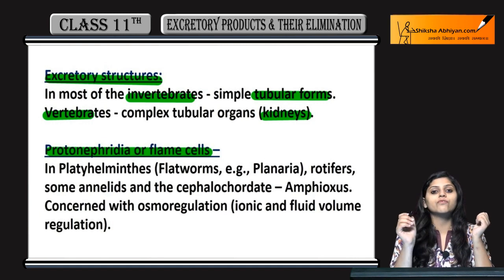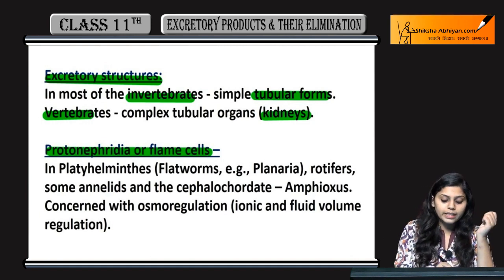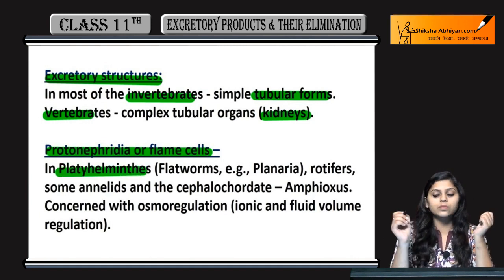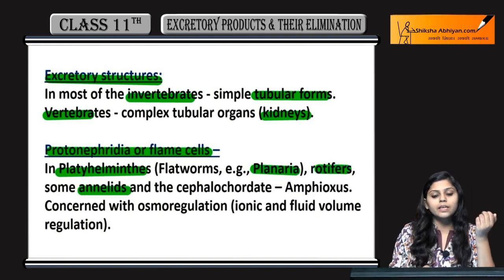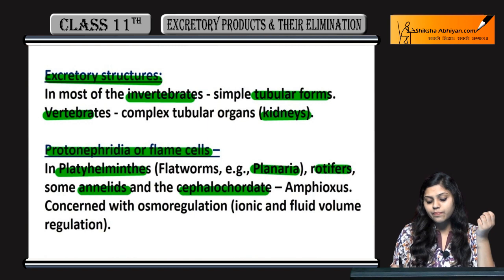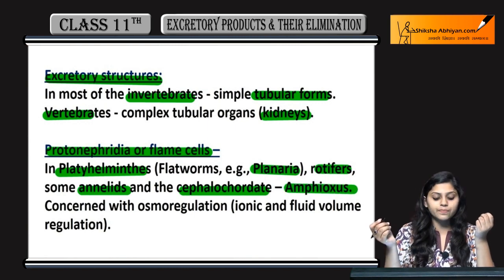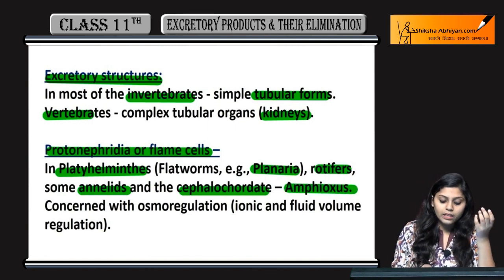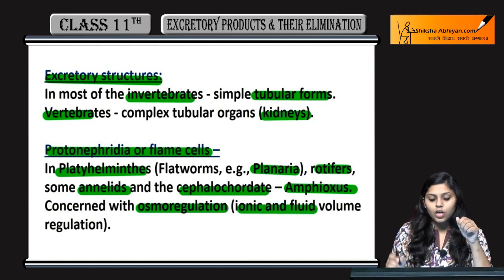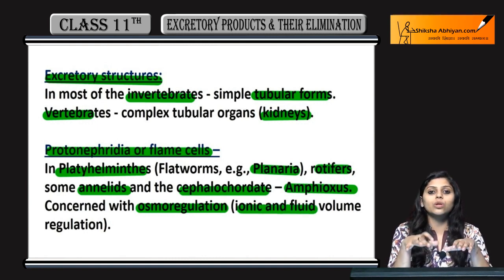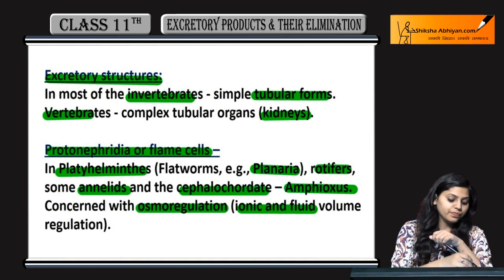Protonephridia aur flame cells kuch platyhelminthes mein present hote hain — like planaria and rotifers. Kuch annelids aur cephalochordates mein bhi, example amphioxus. They are concerned with osmoregulation — maintain karte hain ionic and fluid volume ki regulation ko.